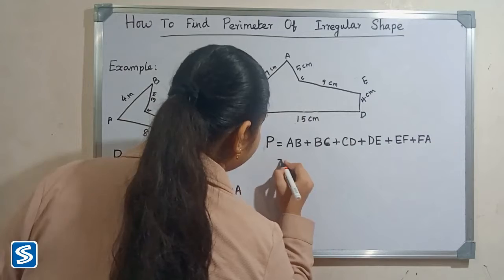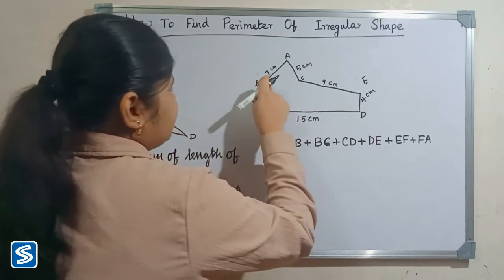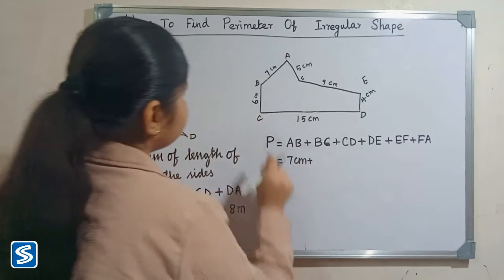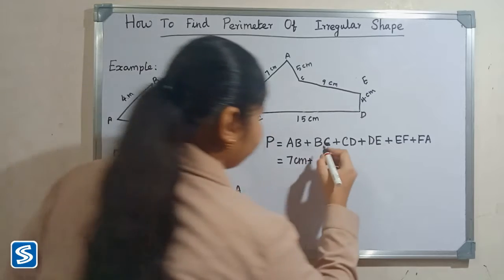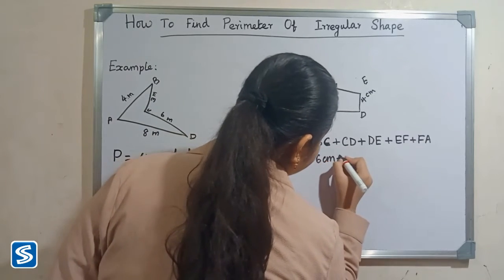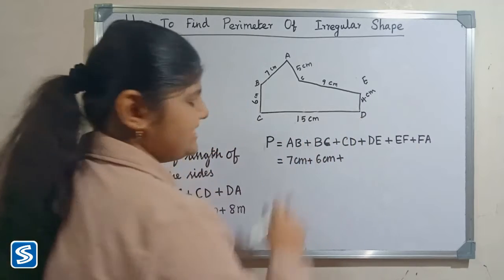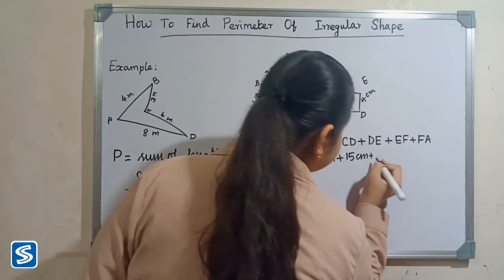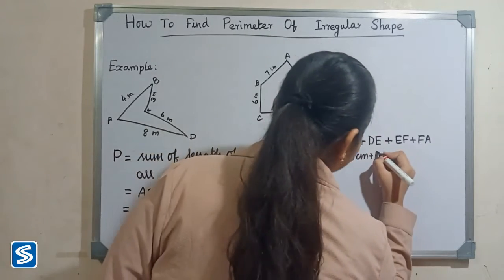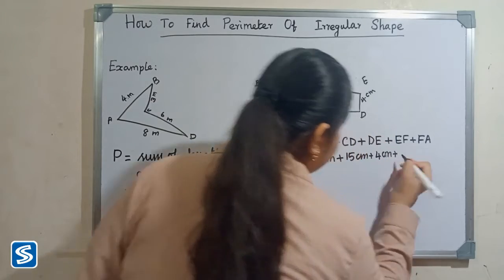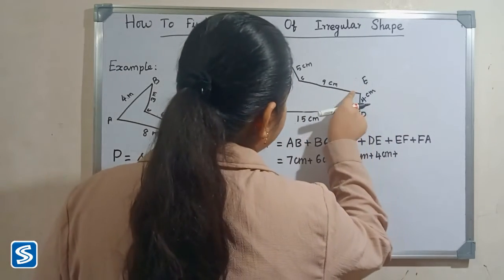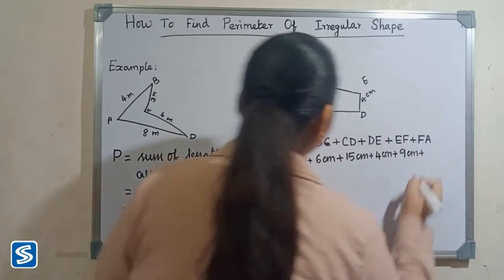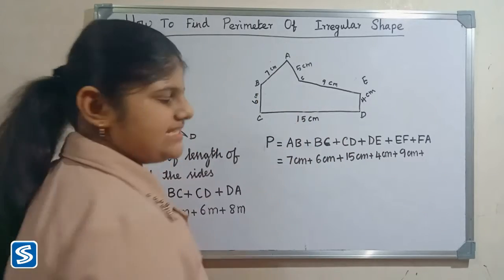Here AB is 7 centimeters, plus BC is 6 centimeters, plus CD is 15 centimeters, plus DE is 5 centimeters, plus EF is 9 centimeters, plus FA is 5 centimeters.